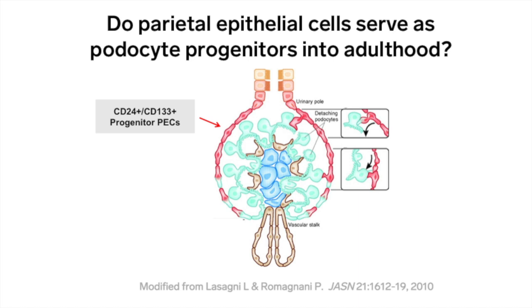Animal models suggest that while PECs continue to serve as a reservoir for podocytes in juvenile and adult mice, their capacity to do so does not extend into adulthood, at least not through the mechanism just discussed. In our earlier discussion about the pathogenesis of FSGS, we talked about how bridges form between Bowman's capsule and denuded areas of the glomerular tuft, allowing migration of PECs into the tuft. Bridging is usually characterized as a pathologic process resulting in FSGS lesions. However, some have argued that bridging may also be used for minor repairs to the tuft — quick replenishment of a few lost podocytes. The question is whether stem cells are capable of maturing into podocytes without making the southerly migration around the vascular pole, since bridging preempts that journey.